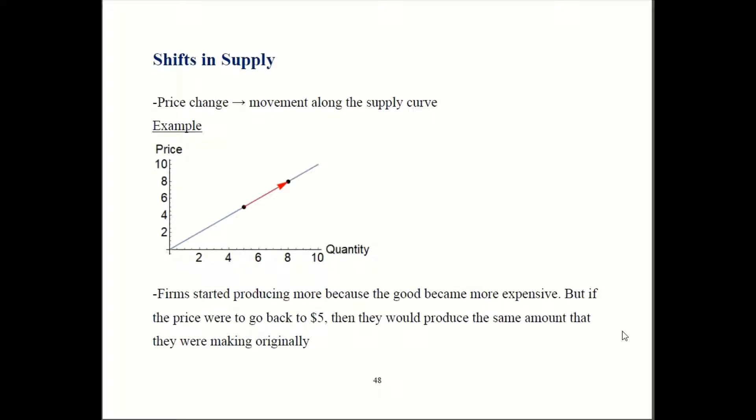So a price change always gives you a movement along the supply curve. Here price was five dollars originally and people bought five units. If price goes up, or sorry I should say firms produced five units. This is just the supply side. We don't know how many of those people bought.